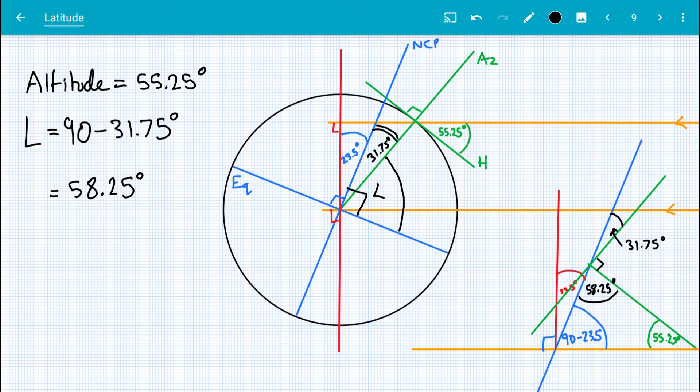And I'll just double check that that is what the answer is supposed to be, because I'd rather give you things that are correct. 58.25 degrees. Yeah, that is correct. Well, it must be correct because that's how triangles work.